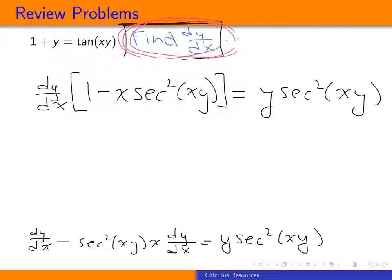One more step. So we have dy dx, the thing we're trying to find, times something equal to something else. So what we're going to do is we're just going to divide both sides by 1 minus x secant squared x y.